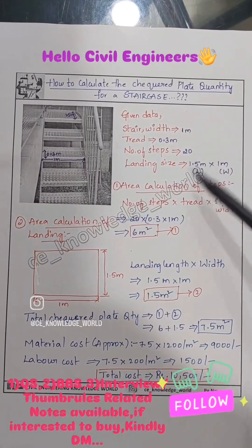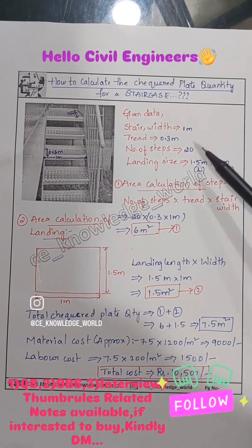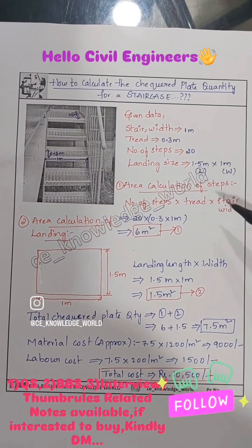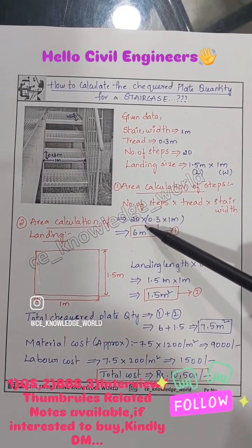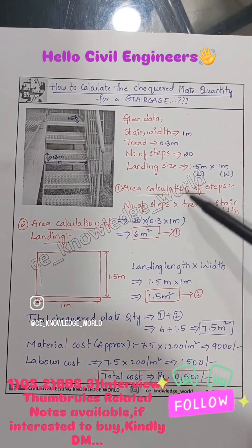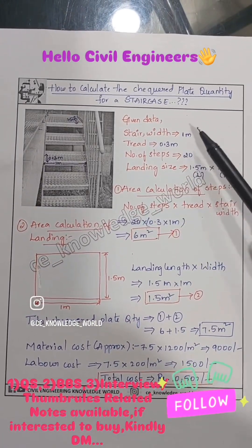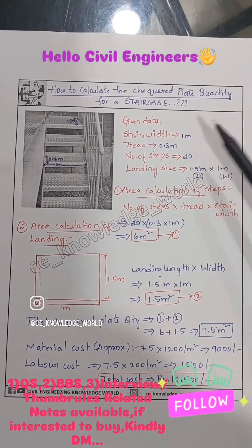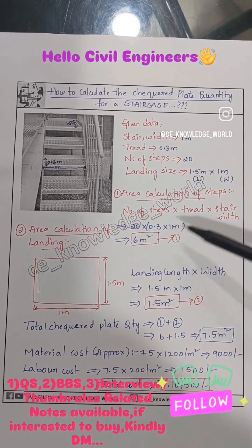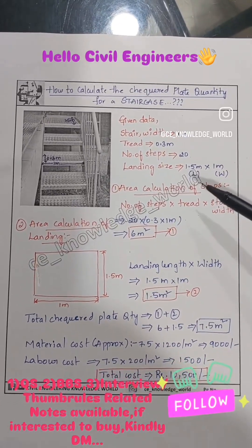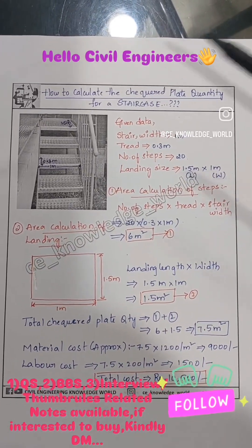First, we will calculate the area of the steps. The formula is: number of steps × tread × width. So that is 20 × 0.3 meter × 1 meter, which gives us 6 square meters.